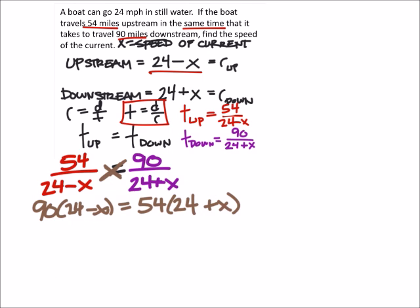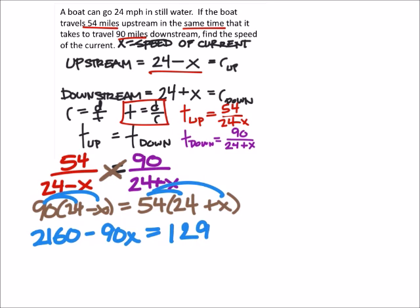All right, well let's go ahead and distribute 90 into the parentheses. 90 times 24, 2160 minus 90x. And this should equal, let's distribute this 54, 54 times 24 is 1296, and then plus 54x.